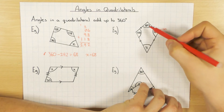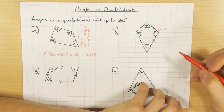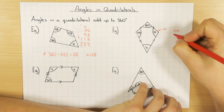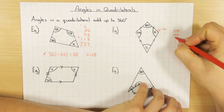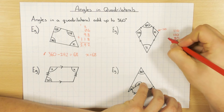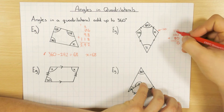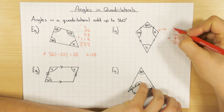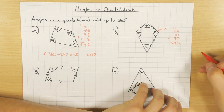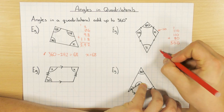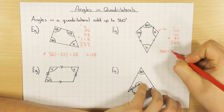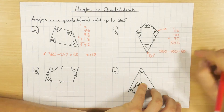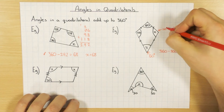So once you know that, you can work out this missing value y. Using exactly the same technique, we add up the angles we do know: a hundred and ten, another hundred and ten for x, and eighty. Zero plus zero plus zero is zero; one add one add eight is ten, so zero carry one; and one add one add one is three. So three hundred. It needs to be three sixty, so three hundred and sixty minus three hundred leaves me with sixty. So y is sixty degrees, and x is a hundred and ten degrees.